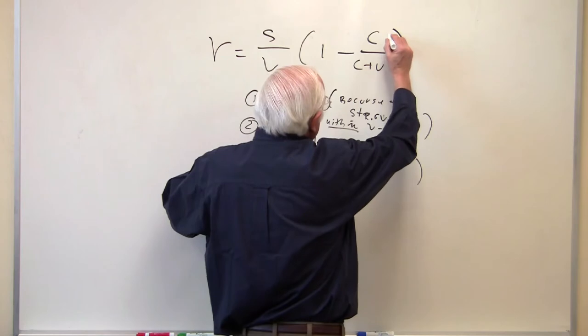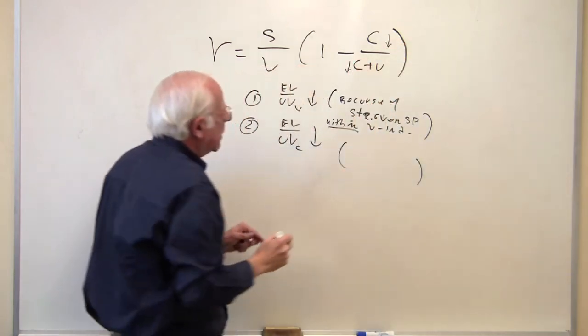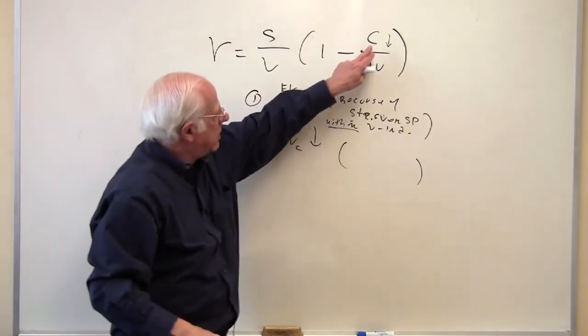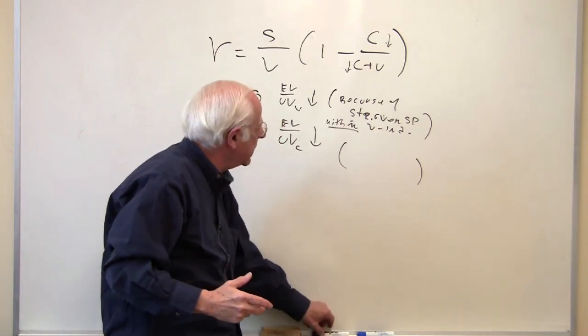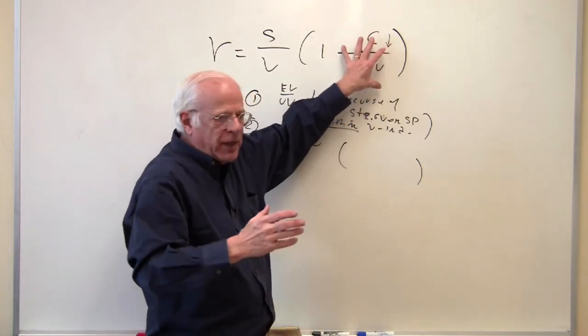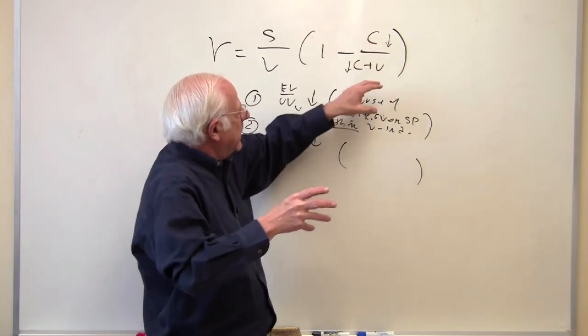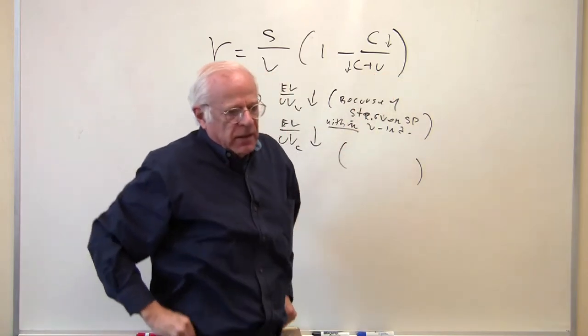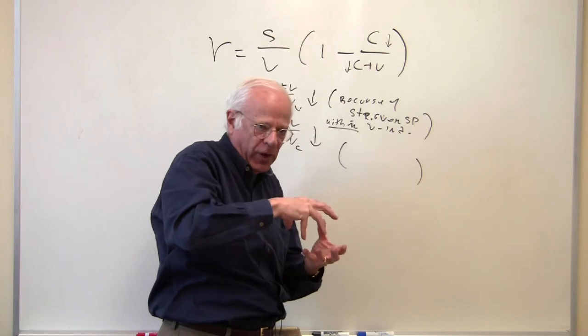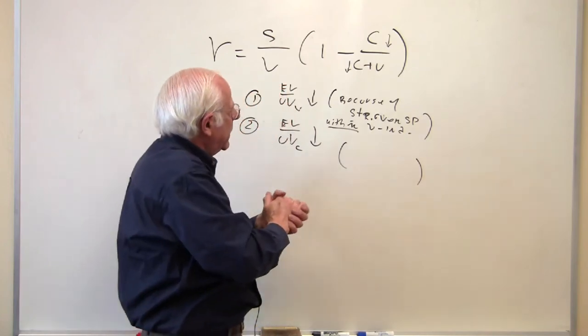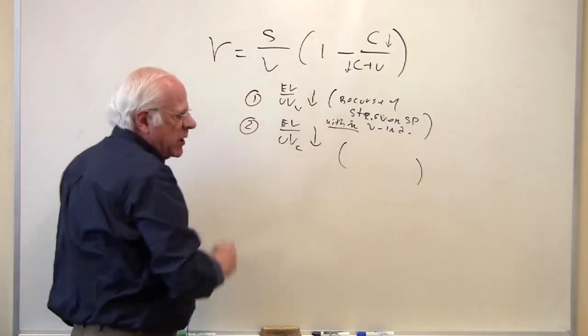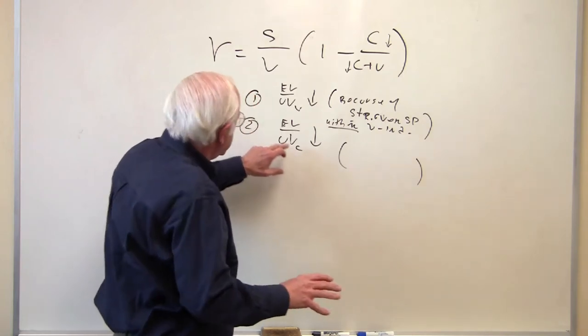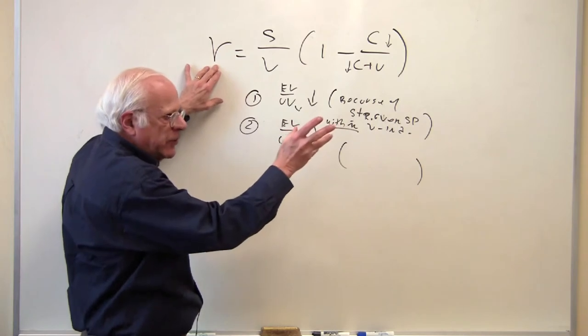Look at this equation here. If C is falling, then that ratio is going to fall, because the C is falling in the numerator and denominator, but it will be falling proportionally more rapidly because you're adding to the denominator an unchanged V, and hence the ratio of the two will fall. That means the R is going to be pushed up. So the cheapening of the C, if there's no other changes, is going to push up the rate of profit.